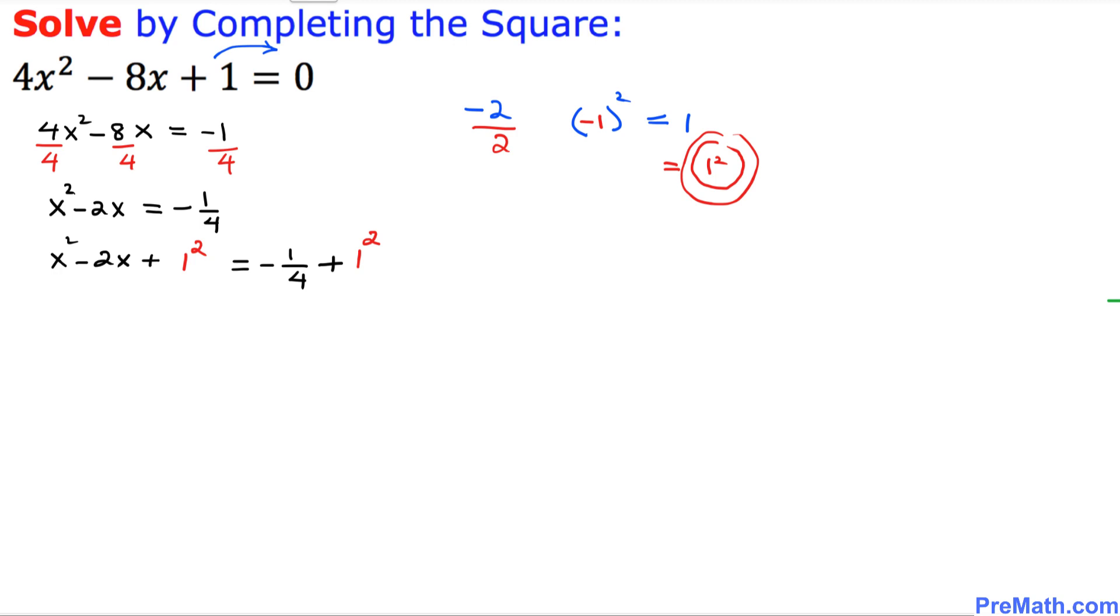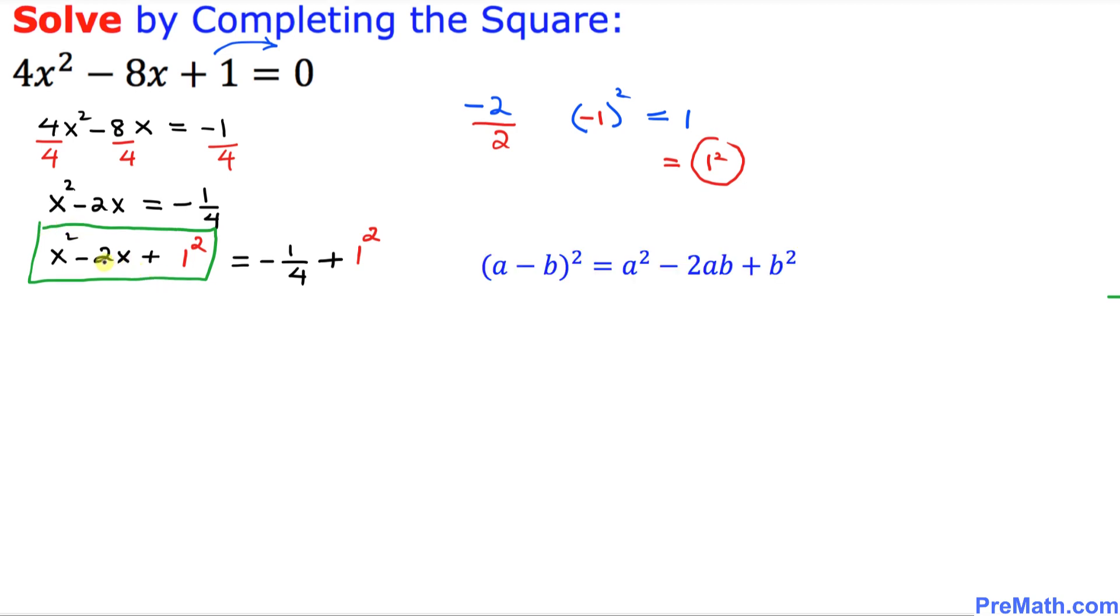And now let's focus on our this left-hand side part only. And this represents a complete square by using this fact a minus b square equal to a square minus 2ab plus b square.